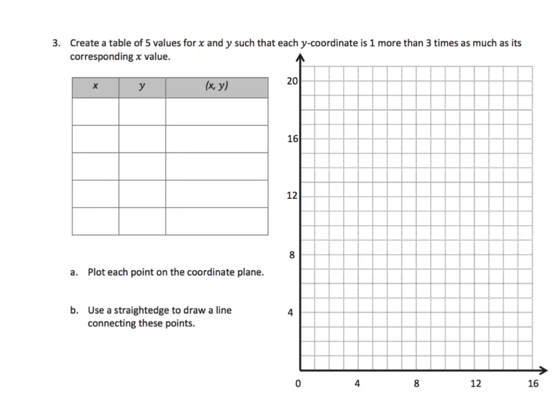In this next one, we're going to do something more complex yet. It says create a table of five values for x and y such that each y coordinate is one more than three times as much as the x value. So, what does that mean? We're going to have to take our x, multiply it by three, then add one. Let's write an expression. So, y would equal 3x plus 1.